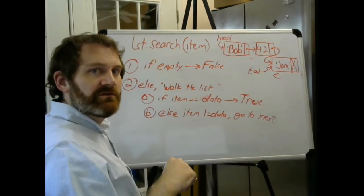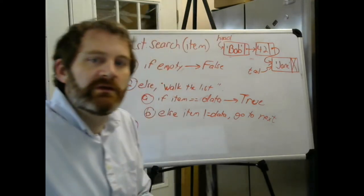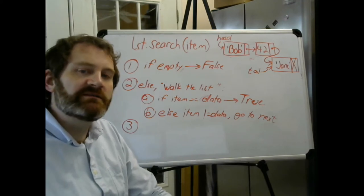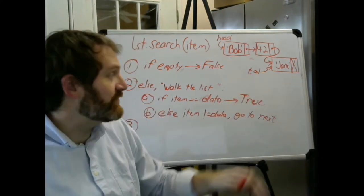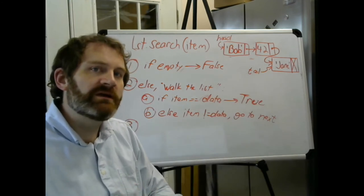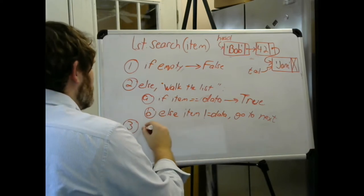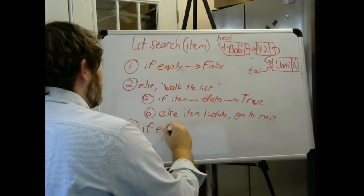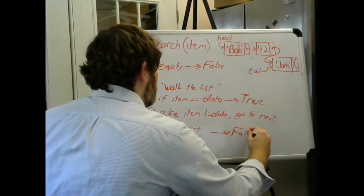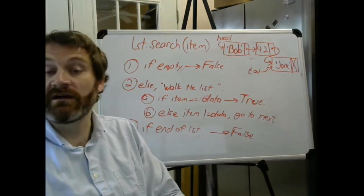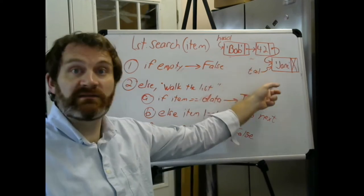Now, the question though is how do you know if the data is not in the list? And you know the value is not in the list if you get to the end, you get to the tail, and you haven't found it. It could be that the tail is the item, but if you've gone all the way through and you didn't find it anywhere, it's not there.